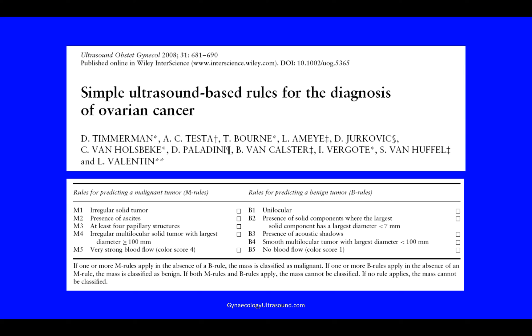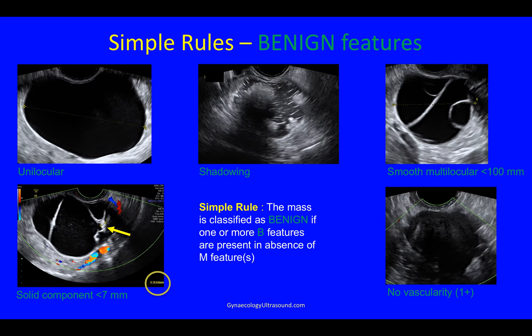Then after that, the IOTA group published simple rules. This paper came out in 2008 and talked about benign features and malignant features.